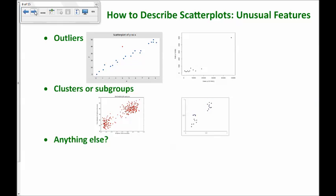The last thing is unusual features. It's kind of our catch-all for something else that stands out about the graph. One very common thing to discuss are outliers. Are there any outliers in the data? Or do there seem to be any clusters or subgroups that are kind of making up this scatter plot that we may need to discuss? Anything else that kind of stands out to you about the graph, you can also discuss that as you describe the scatter plot.